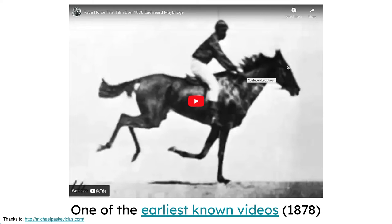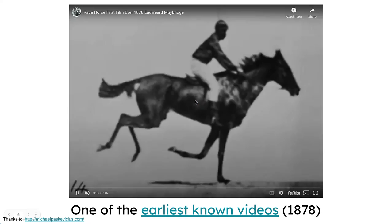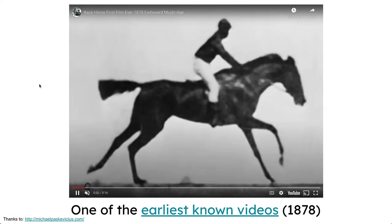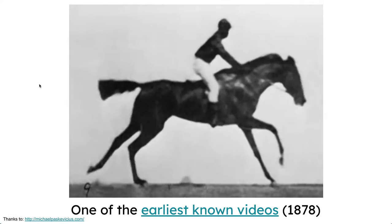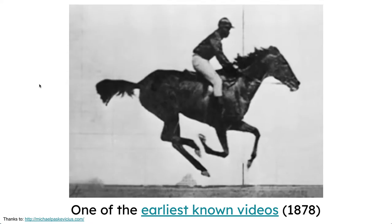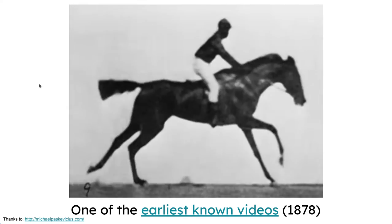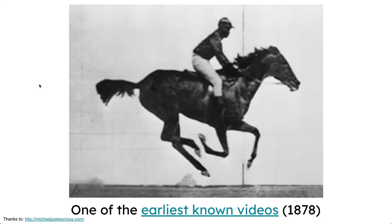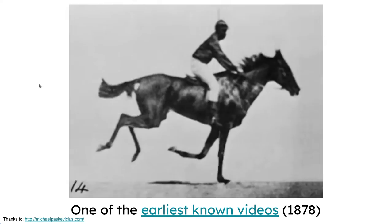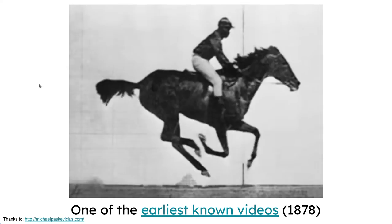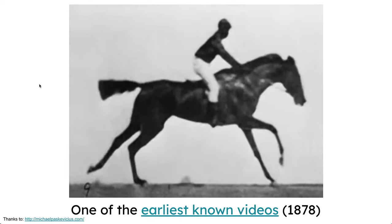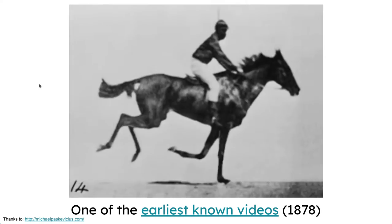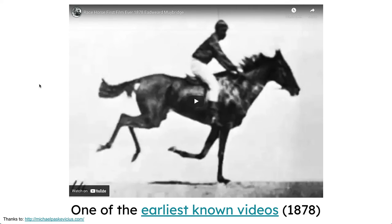Just to give you a bit of background, here's one of the first or earliest known video clips ever created, of a person running with their horse. You can see it's a loop of pictures going through — they took a bunch of individual photos and stitched them together to make a video.